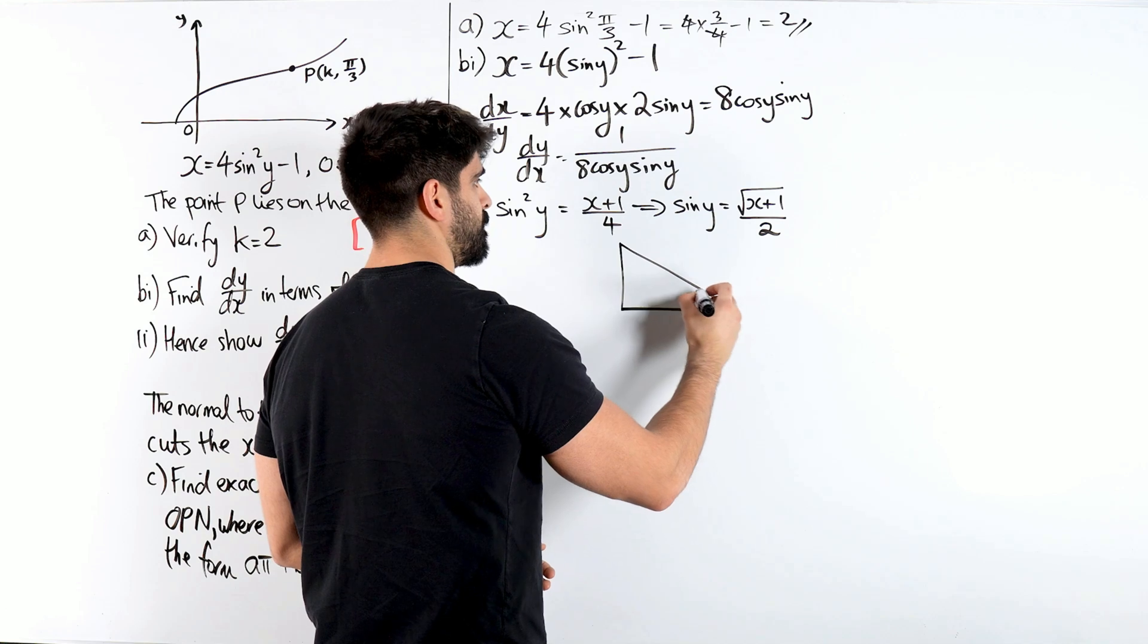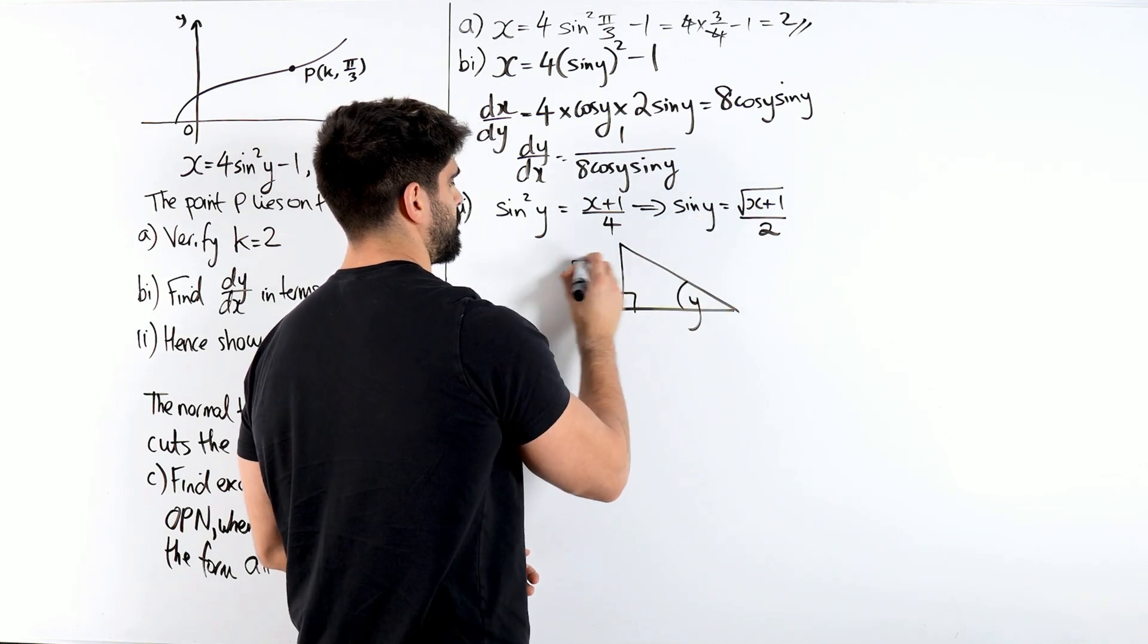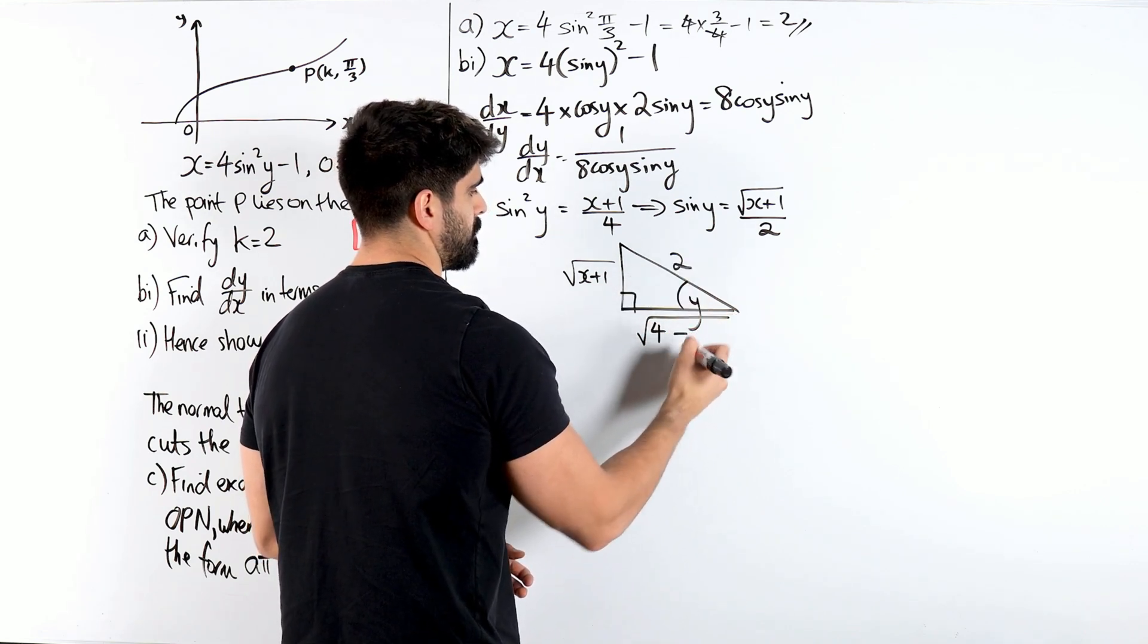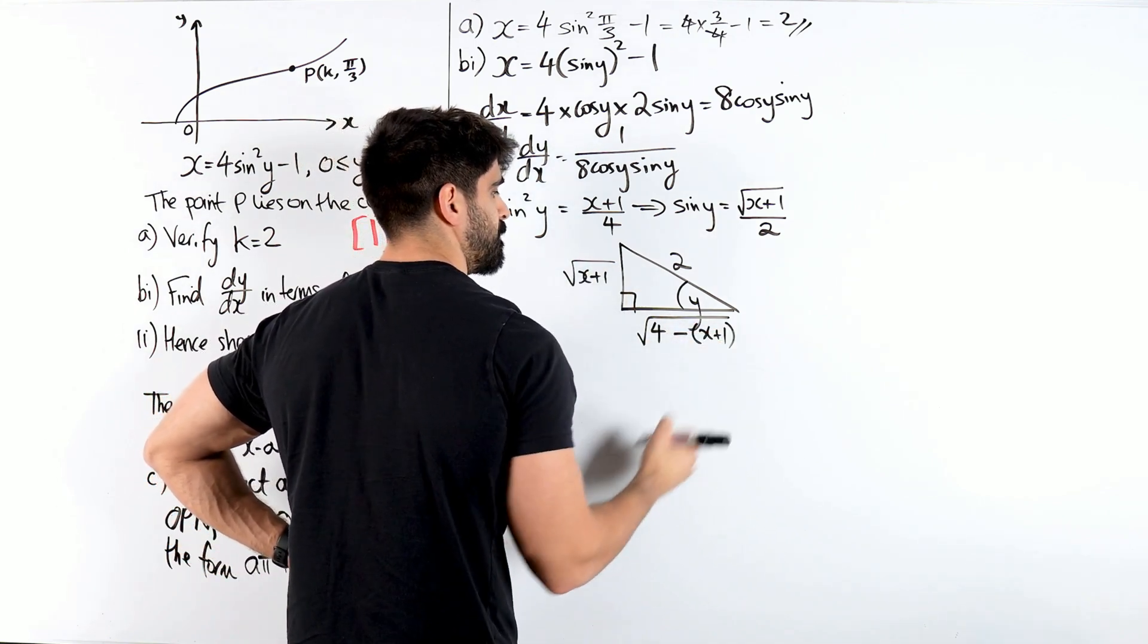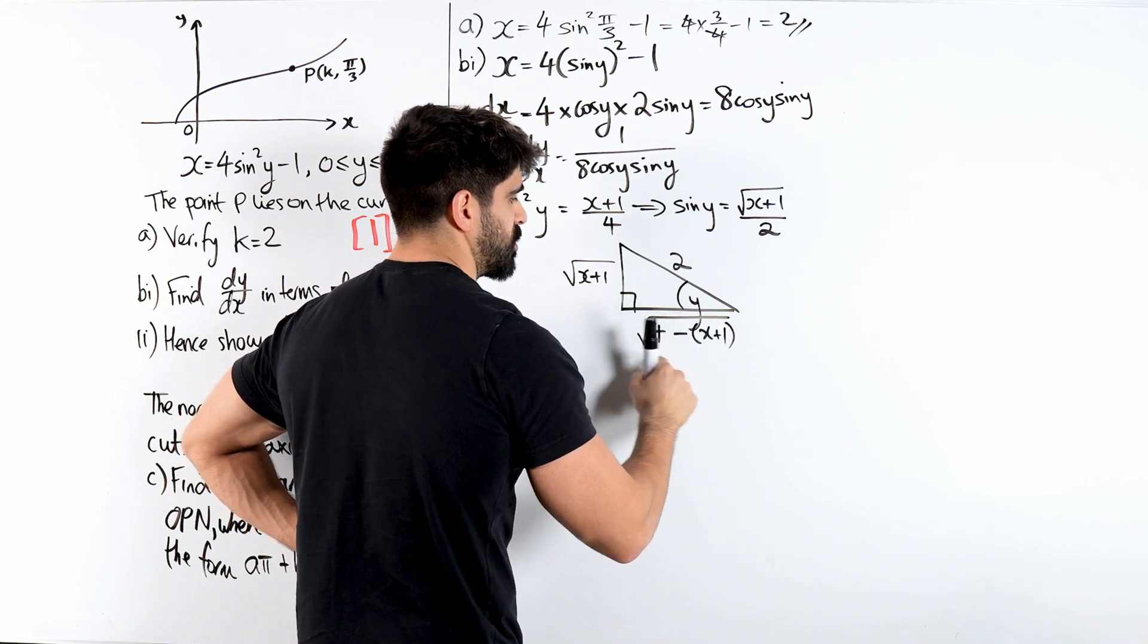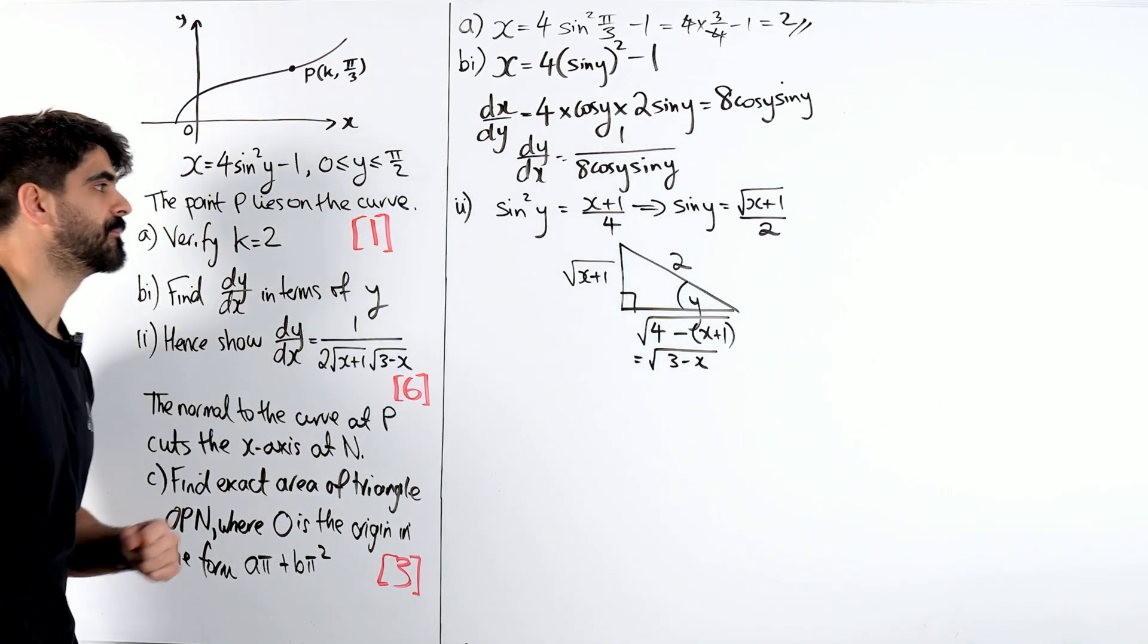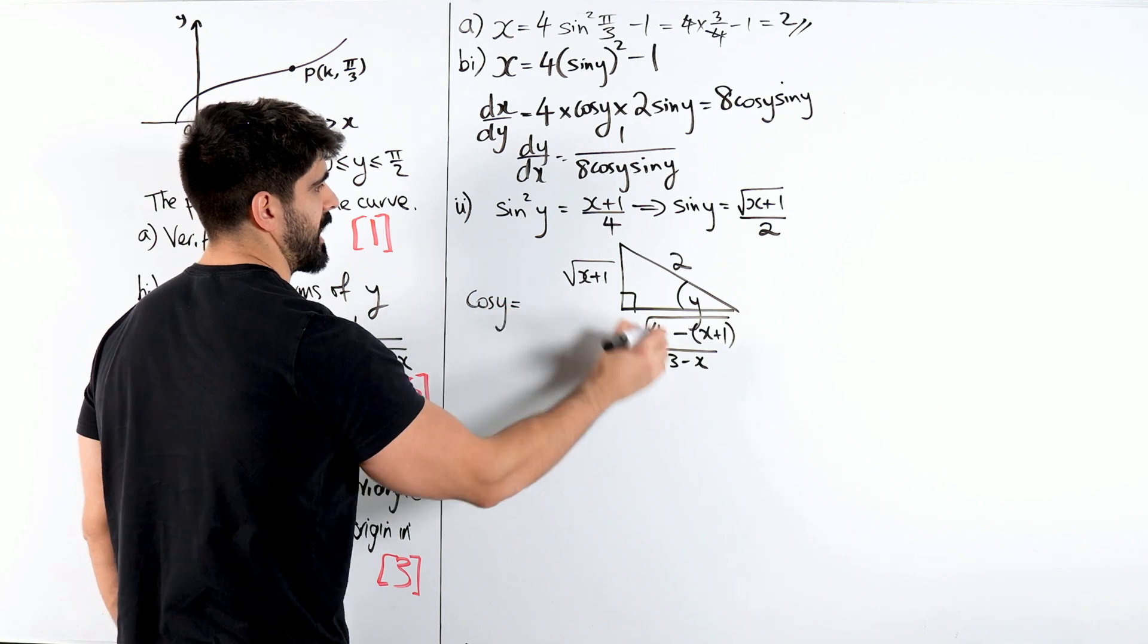We're going to look at this triangle, the angle is y, sin is opposite over the hypotenuse. So the adjacent side is going to be 2 squared 4 minus this whole thing squared, which is just x plus 1, which becomes 4 minus x minus 1, which is 3 minus x. So this is just root 3 minus x. Now you can see where that's coming from.